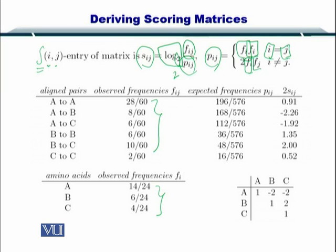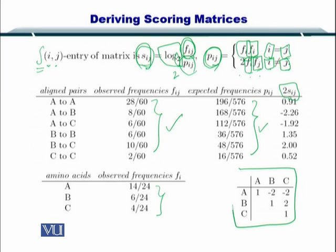So p_ij is simply the frequency of occurrence of an amino acid if they are the same. If f_ij, that is, i is not equal to j, then the p_ij equals two into f_i into f_j. So this will help you compute p_ij and f_ij is already with you, that is here. So p_ij is here now and you can compute two times s_ij, that is here, and you obtain the scoring matrix.